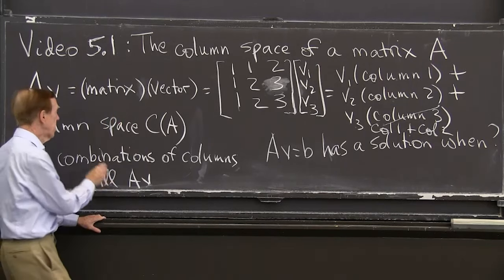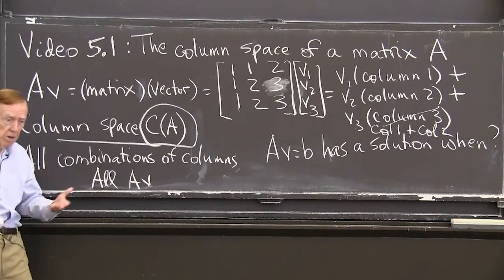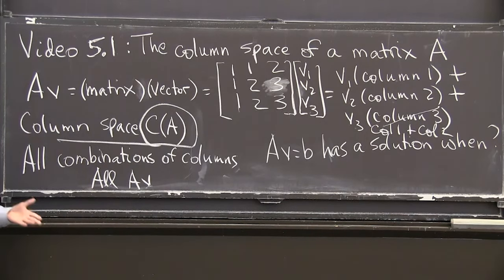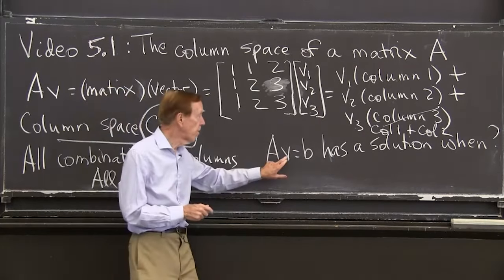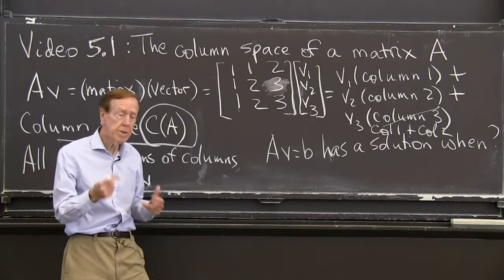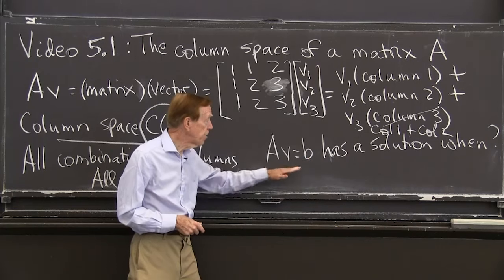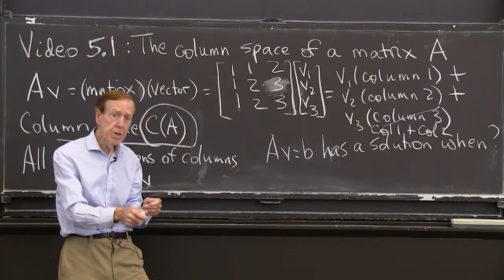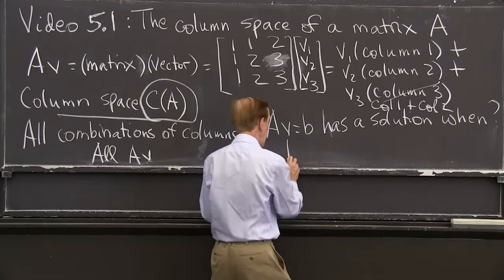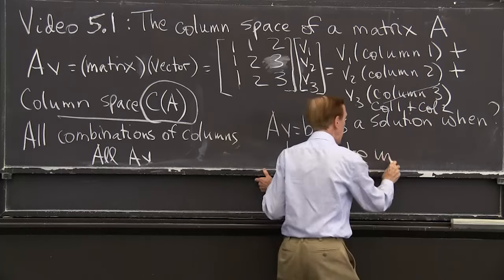So we thought about this as all combinations of the columns. In other words, it's all the results, all the outputs, from A times v. It's all the outputs from A times v. Those are the combinations of the columns. So we can answer the most basic question of linear algebra. When does Av equal b have a solution? When is there a v so that I can solve this? When is there a v that solves this equation? So it's a question about b. What is it about b that must be true if this can be solved? This equation is saying b is a combination of the columns of A. So this has a solution when b must be in the column space.